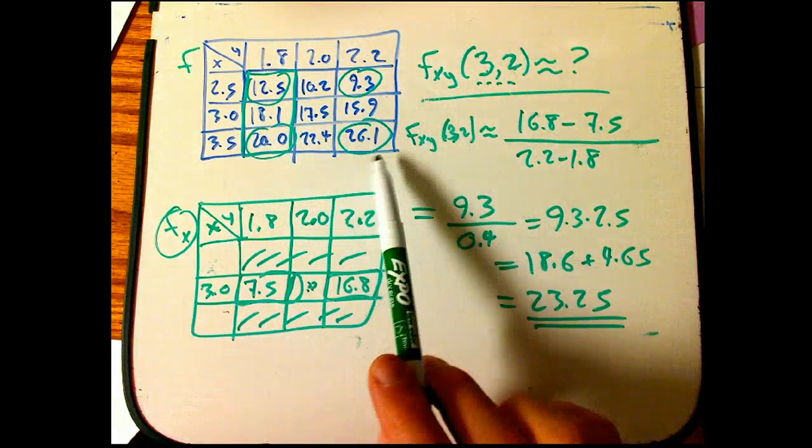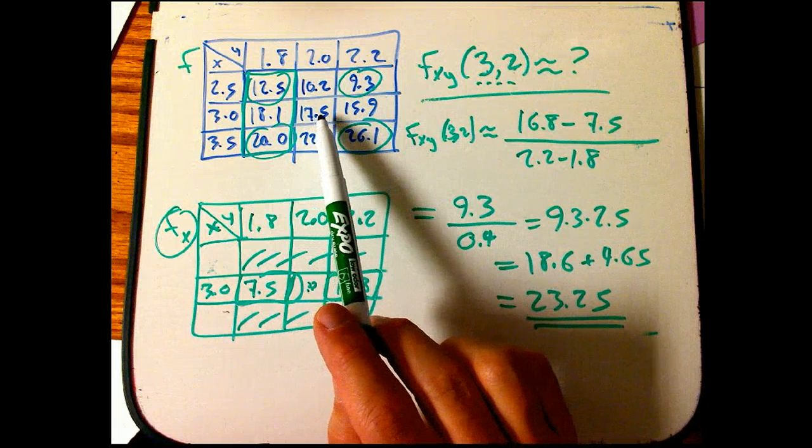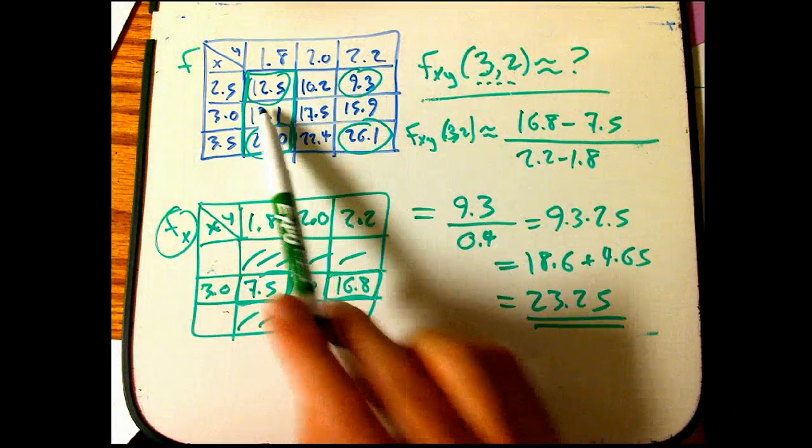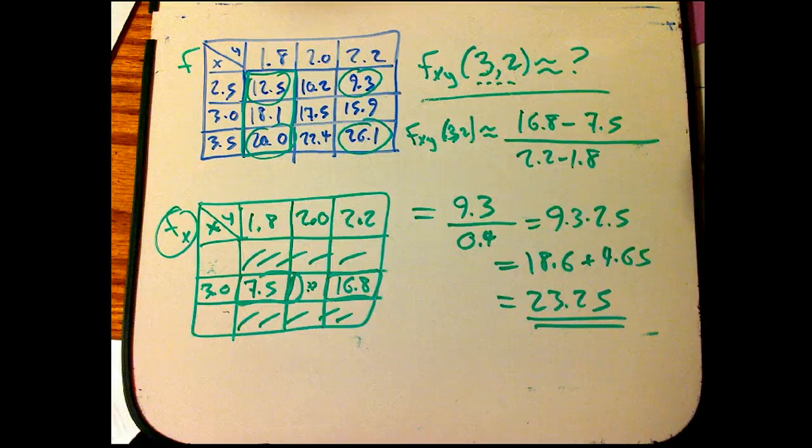When you use this bracketing technique, I definitely didn't use f of (3,2). And I didn't actually use these four values either. I just used these corner values. And I want to just show you how they come in.